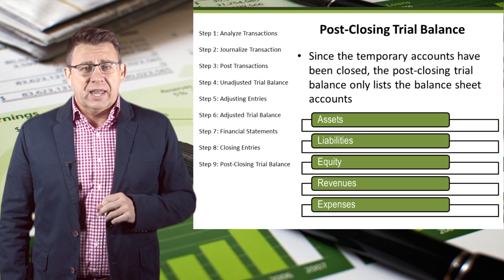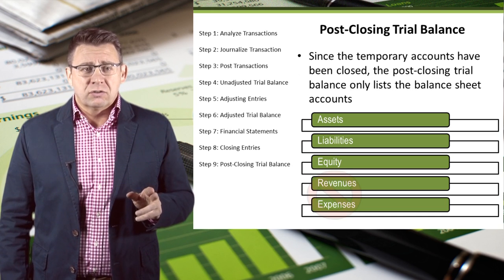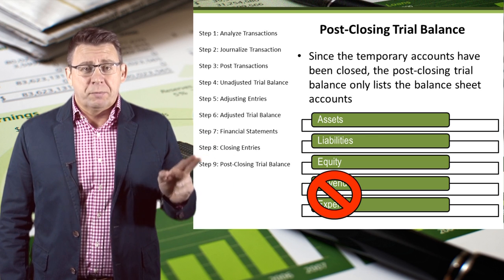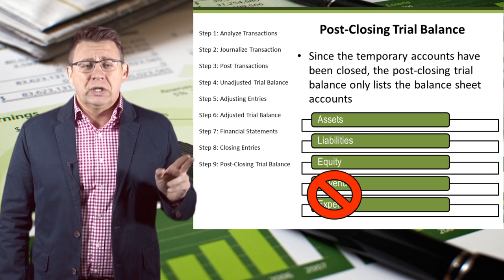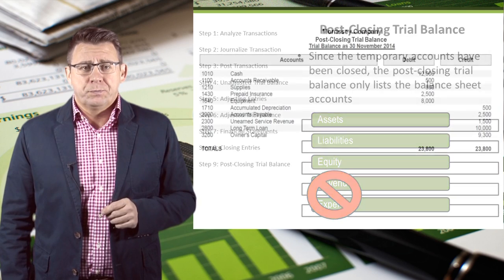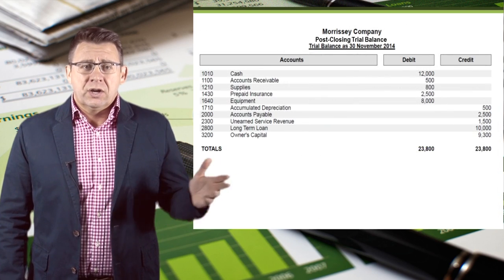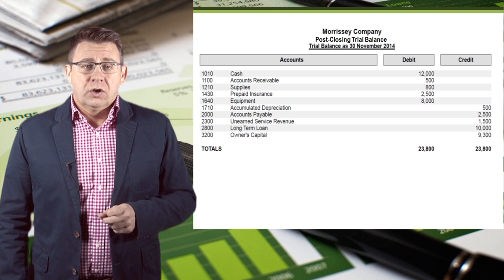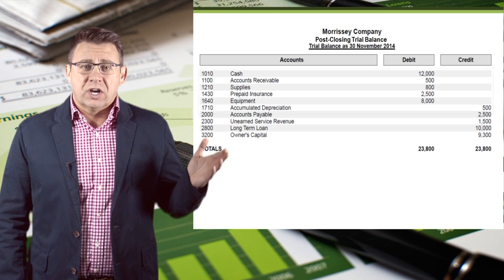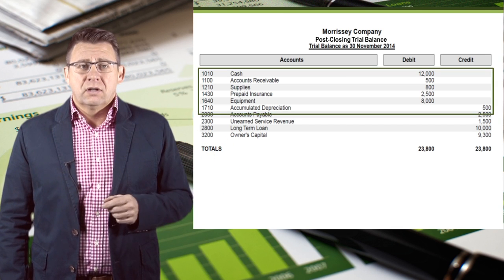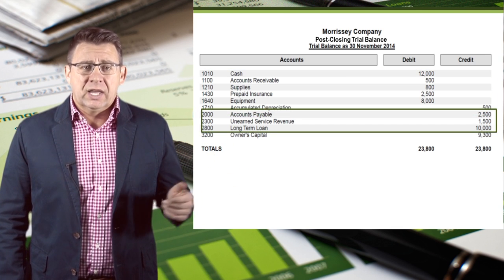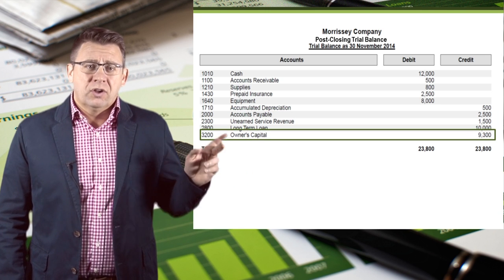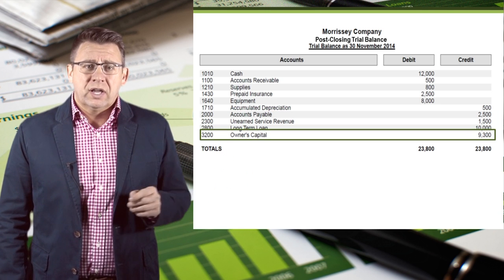Since the temporary accounts have been closed, the post-closing trial balance only lists the balance sheet accounts. Here is an example of a post-closing trial balance. Notice it includes our asset accounts, liability accounts, and balance sheet equity account, owner's capital.